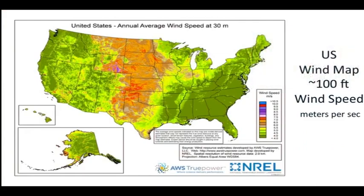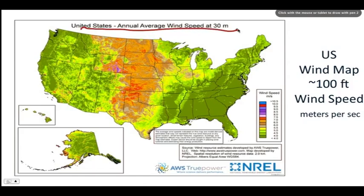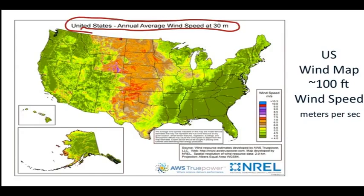Here's a wind map from NREL — they have good map resources. It varies with wind speed and with height above the surface. This map is at 30 meters — that's about 3.3 feet per meter, so that's about 100 feet above the surface.